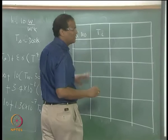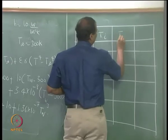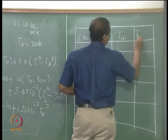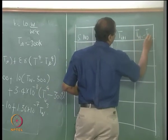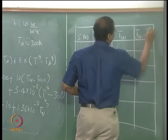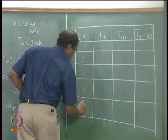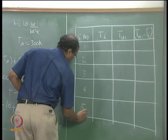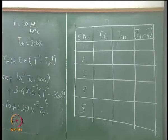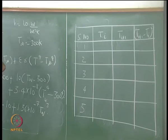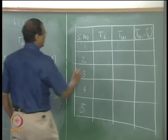I will just put it as T_i instead of T_{w,i}. What is a good initial guess? Around 360 to 400. We will start with 400.